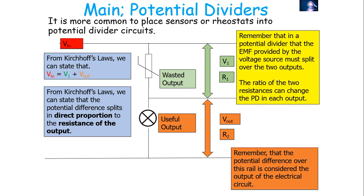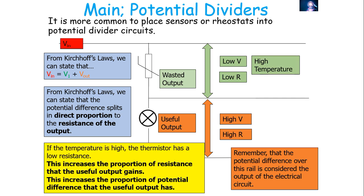We can also consider a sensor rather than a rheostat — for example a thermistor. A thermistor is a semiconductor, and as you'll know from GCSE, the higher the temperature of a thermistor the lower its resistance. So if we have a high temperature in our surroundings, this gives the thermistor a low resistance, and proportionally it will take less potential difference. Therefore our useful output — the bulb — has a higher resistance compared to the thermistor, so it will have a higher potential difference.